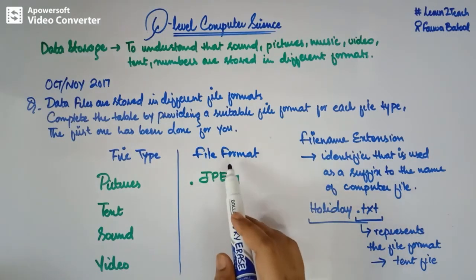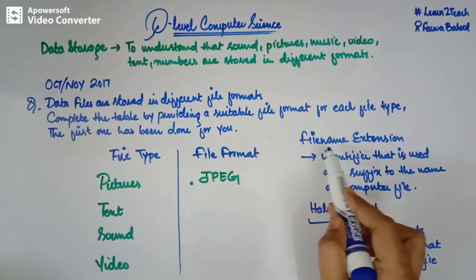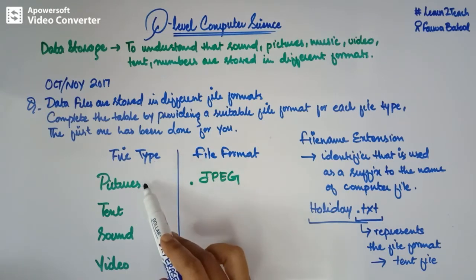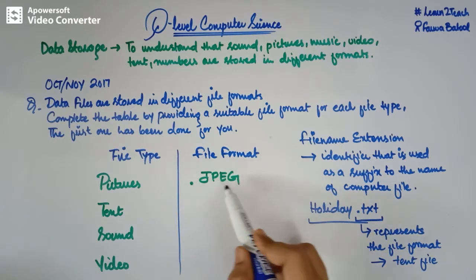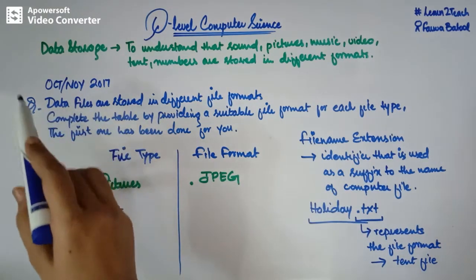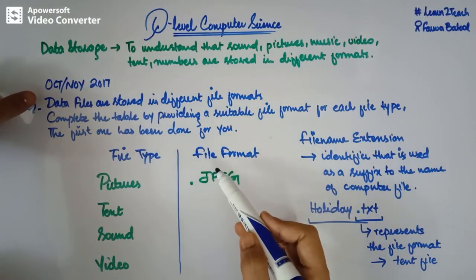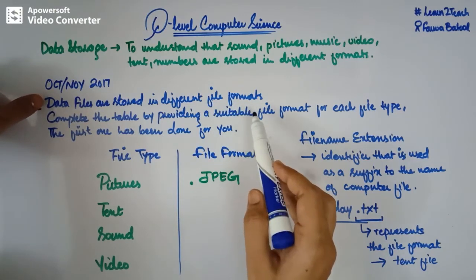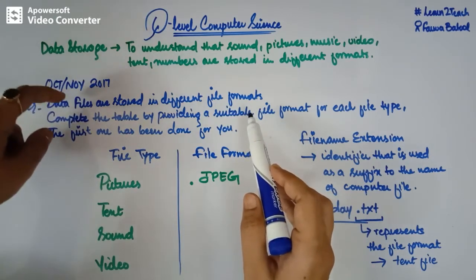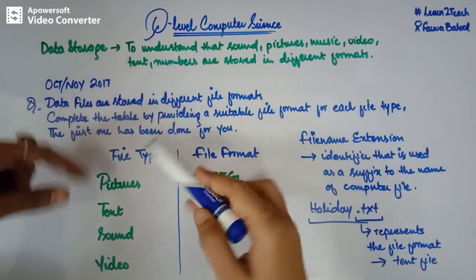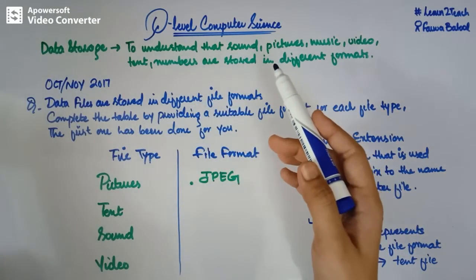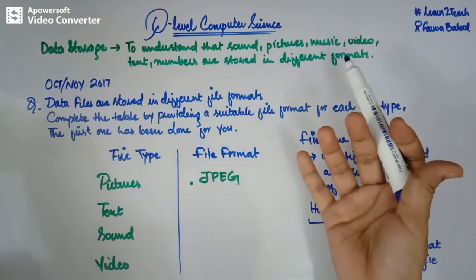Here in this table, we are going to represent the file formats in the form of file name extensions. For example, if I have a file type like pictures, then I have the file format .jpg for that. The question says: data files are stored in different file formats. We have different types of files — text file, image file, video file, audio file — and these files are stored in different file formats. We have a different file format for different file types.